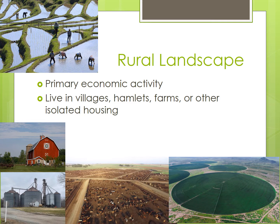Rural areas tend to have relatively fewer buildings and homes and lower population density. But the density of human settlement often relates to the intensity of the land use. The more intensive the land use, like subsistence rice farming, the higher the population density tends to be. And agricultural areas can have very distinctive landscape features.